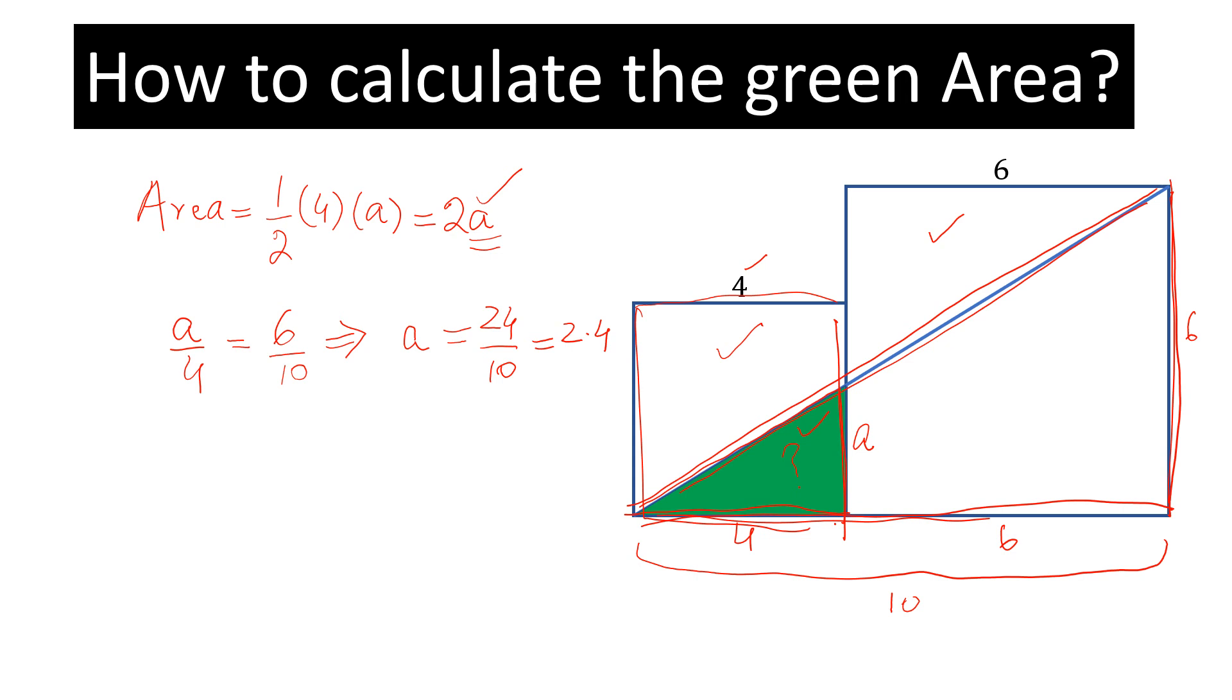Now, put the value of A here and we get area equal to 2 into 2.4 and this will be equal to 4.8 unit square. So this is the area, the required area.